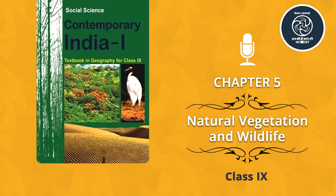India is the only country in the world that has both tigers and lions. The natural habitat of the Indian lion is the Gir Forest in Gujarat. Tigers are found in the forests of Madhya Pradesh, the Sundarbans of West Bengal and the Himalayan region. Leopards too are members of the cat family and are important among animals of prey. The Gir Forest is the last remaining habitat of the Asiatic lion.